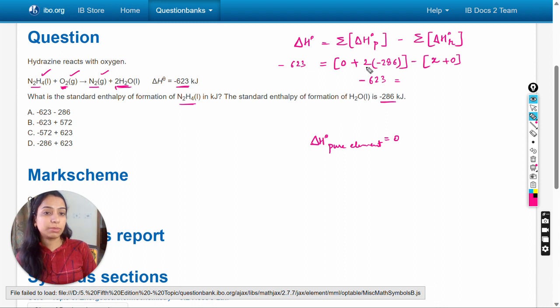286 multiplied by 2 is equal to -572, minus x. So here x will be...